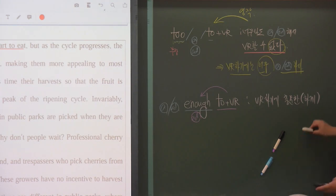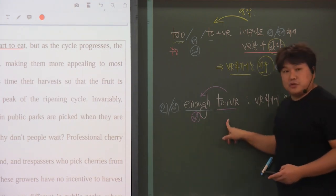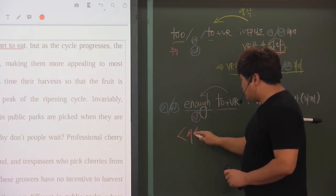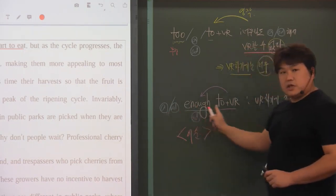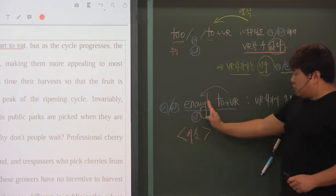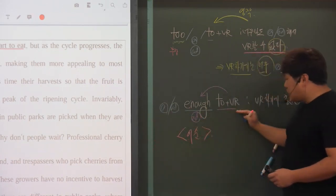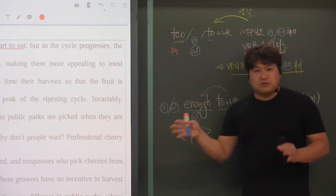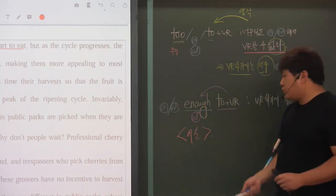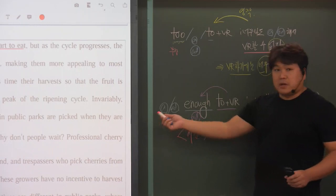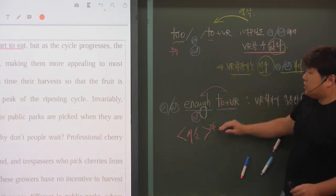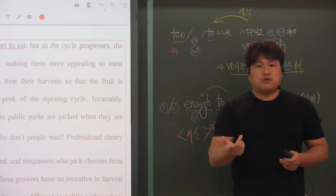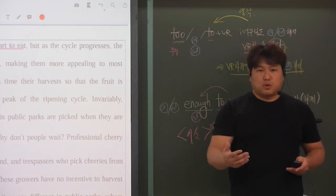enough to 부정사인 경우에 핵심적으로 시험에 나오는 포인트, 잘 기억해둬야 되는 것은 바로 어순이죠. '동사원형 하기에 충분하게 형용사, 충분하게 부사' 이런 식으로 나오기 때문에 기본으로 어순이 제일 어렵습니다. 우리나라 말에 완전 반대잖아요. 그래서 enough to 부정사나 too to 용법 같은 경우는 서술형으로 시험을 내는 것을 선생님들이 상당히 좋아합니다.